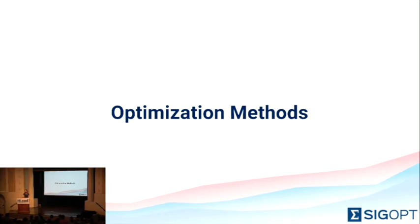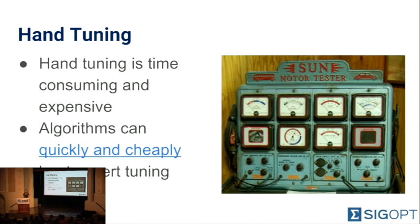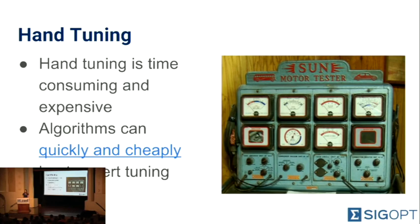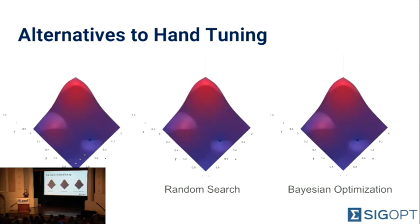We've talked about everything that happens between when you receive a set of hyperparameters and when you report back how well your model is performing. Now let's talk about how you're actually receiving that set of hyperparameters. The first approach is to choose them yourself — reading papers or using expert intuition and trying a couple of different configurations. This method is called hand-tuning, and in practice it's time-consuming and expensive. Algorithms can quickly and cheaply beat expert hand-tuning — within several hours, an algorithm can beat what a human has done in years. Alternatives to hand-tuning include grid search, random search, and Bayesian optimization.